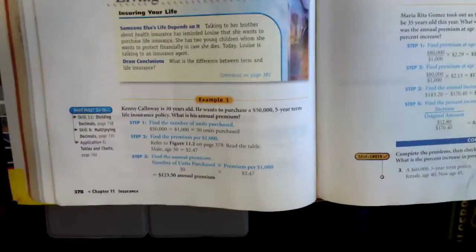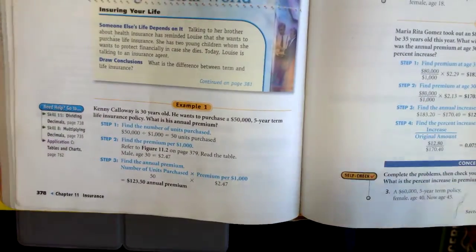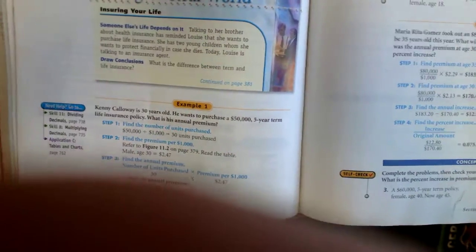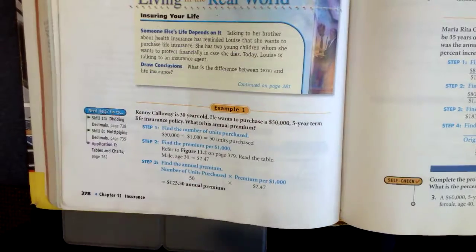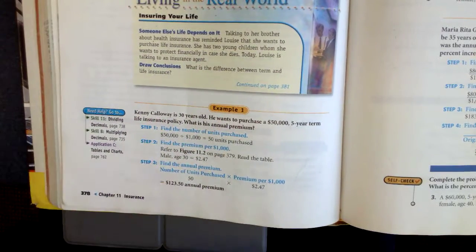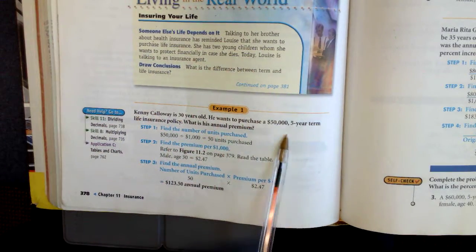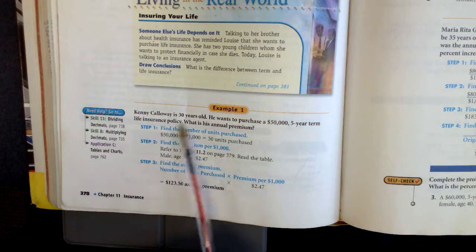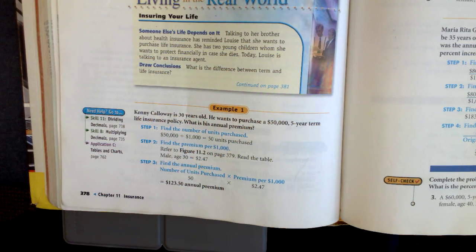We got to do a little flipping back and forth here. Here's our example. Example one, we got Kenny Calloway, he's 30 years old. He wants to purchase a $50,000 five-year term life insurance policy. He wants to know his annual premium.